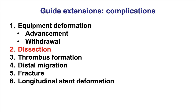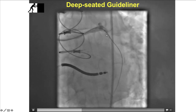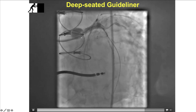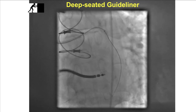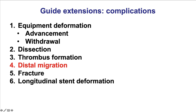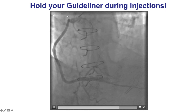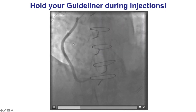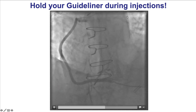Another complication is causing dissection when there is deep engagement. This is an example of a deeply seated guide extension where contrast injection causes an aortocoronary dissection tracking backwards. So, like everything else, if there is pressure dampening, one should not inject contrast because this is likely to cause dissection. Also, using a guide extension could lead to thrombus formation — that is why the ACT should be closely monitored. There is also the possibility of distal migration, as seen in this example where injecting contrast through a saphenous vein graft caused the guide extension to take off during injection and migrate distally into the vein graft. The lesson is that you should hold the guide extension during contrast injection.